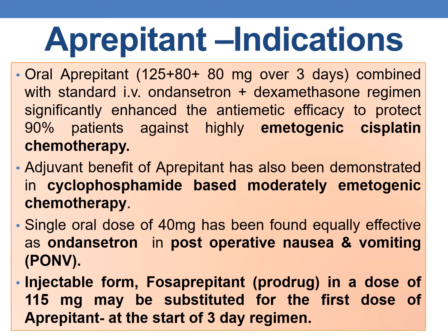Coming to indications, oral aprepitant is given as 125 mg on day one, then 80 mg on day two and 80 mg on day three. It is combined with standard IV ondansetron plus dexamethasone regimen, which significantly enhances anti-emetic efficacy to protect 90% of patients against highly emetogenic cisplatin chemotherapy.